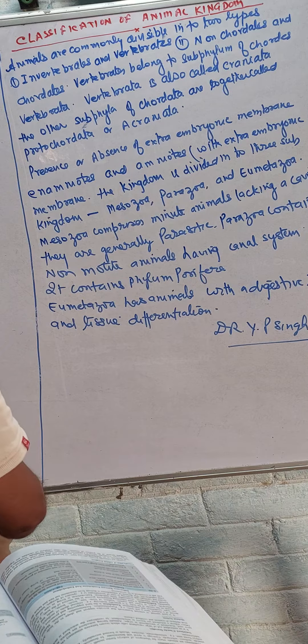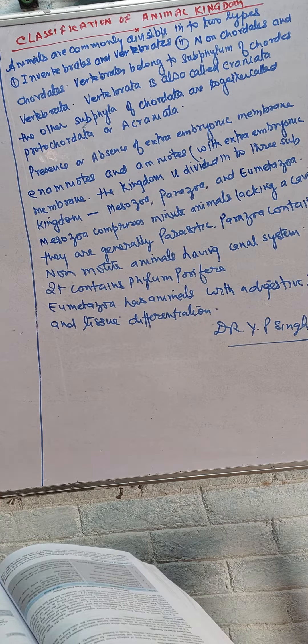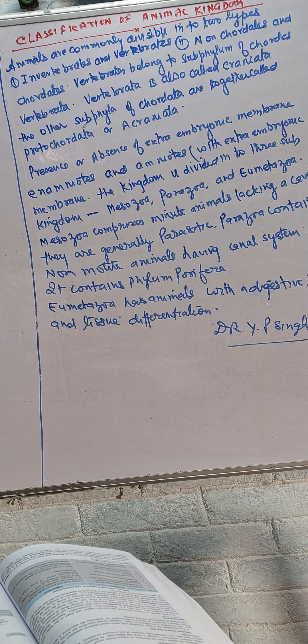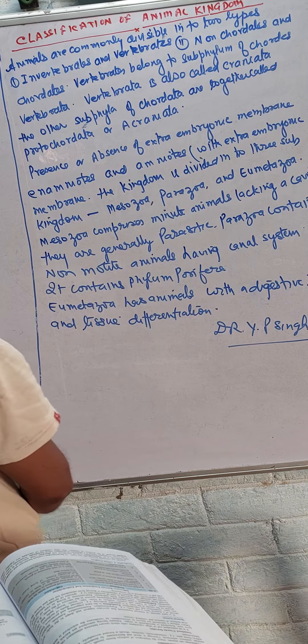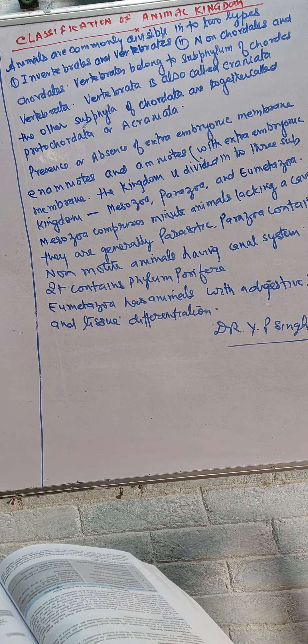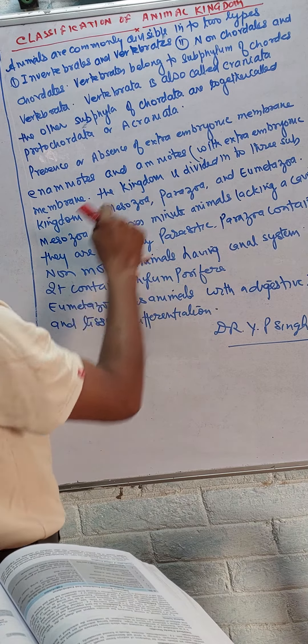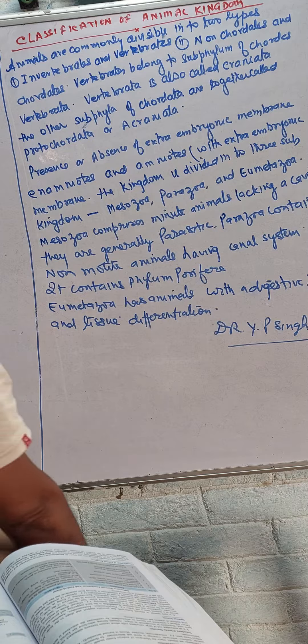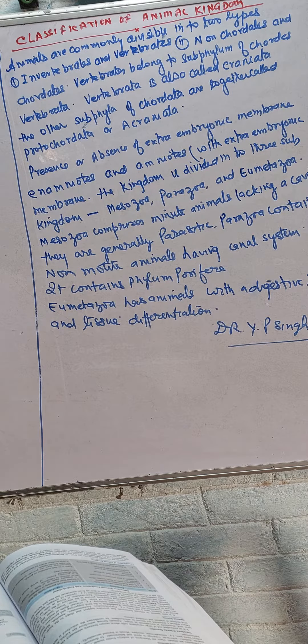Vertebrates belong to the sub-phylum of chordates called Vertebrata. Vertebrata is also called Craniata. The other sub-phylum of Chordata are together called Protochordata or Acraniata. Presence or absence of extra-embryonic membrane distinguishes amniotes and anamniotes, with amniotes having extra-embryonic membranes.